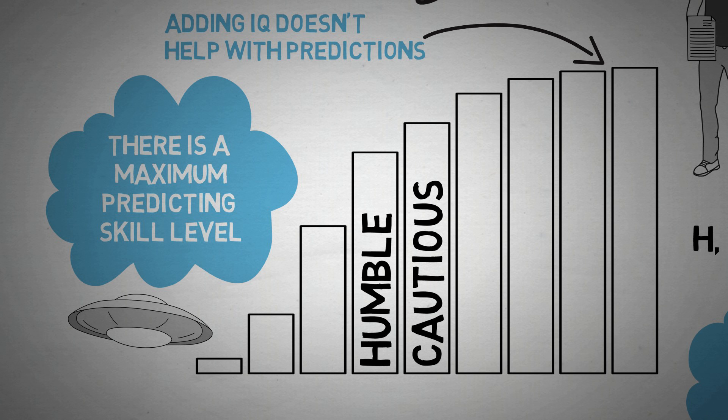The best super forecasters are also actively open-minded. They completely understand that beliefs are hypotheses to be tested, and not treasures to be protected. They are also comfortable with numbers and self-critical. They are careful about the anchoring bias and are thoughtful updaters, which means that when facts change, they also change their minds.